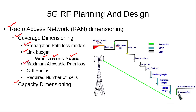Using the maximum allowable path loss and the propagation model, we calculate the cell radius, and from the cell radius we can calculate the required number of cells for the 5G deployment. In the capacity dimensioning, we calculate the required number of cells using the capacity requirements.